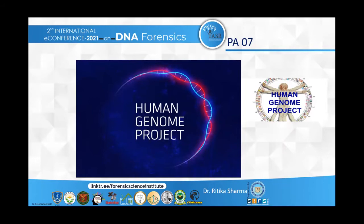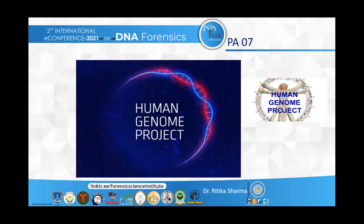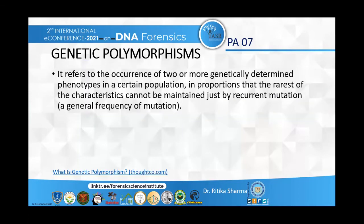After this entire project was over, there was a great race among researchers to find out which candidate genes can be linked to various diseases so that we can enter a new era where gene therapy can be given. Genetic polymorphism refers to the occurrence of two or more genetically determined phenotypes in a population in proportions that cannot be maintained just by recurrent mutations. It affects at least one percent of the population, whereas a mutation is something very rare and sudden in onset.